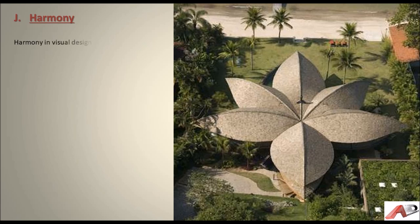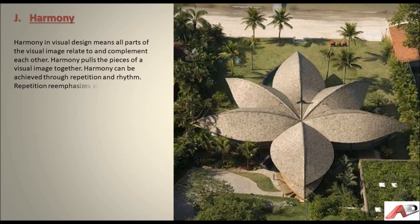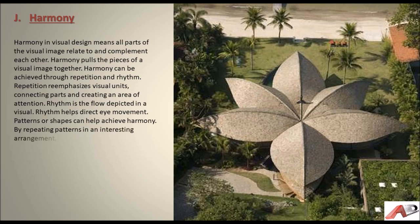Harmony in visual design means all parts of the visual image relate to and complement each other. Harmony pulls the pieces of a visual image together and can be achieved through repetition and rhythm. Repetition re-emphasizes visual units, reconnecting parts and creating areas of attention. Rhythm is the flow depicted in the visual that helps direct eye movement. Patterns or shapes can help achieve harmony by repeating in an interesting arrangement, bringing the overall visual image together.